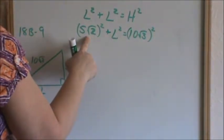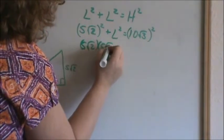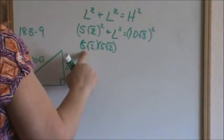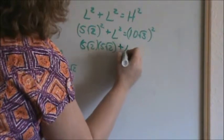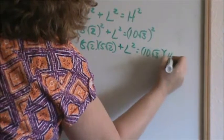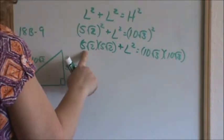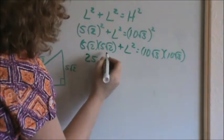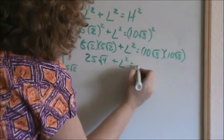Remember, 5 square root of 2 squared means 5 square root of 2 times 5 square root of 2. I recommend writing this out until you're used to squaring it. Plus leg squared equals 10 square root of 3 times 10 square root of 3. Multiplying radicals: numbers to numbers, radicals to radicals. 5 times 5 is 25. I don't know that leg. 10 times 10 is 100.